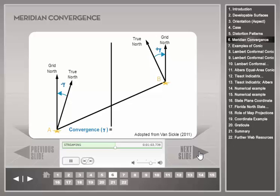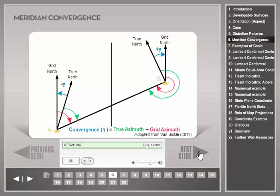If a point in the northern hemisphere lies to the east of the central meridian, the meridian convergence angle will be positive. Likewise, if a point lies to the west of the central meridian, the meridian convergence angle will be negative. Only at the central meridian does grid north coincide with true north. The azimuth, or direction of a line from a point A to a point B, is measured by the clockwise angle from north. The green arcs show the true azimuth between true north and the line AB, while red arcs show the grid azimuth from grid north to line AB. The difference between true azimuth and grid azimuth is the meridian convergence measured at the endpoints of line AB.